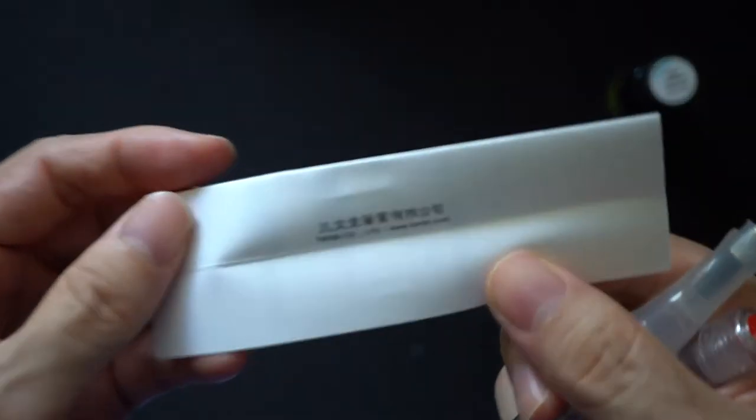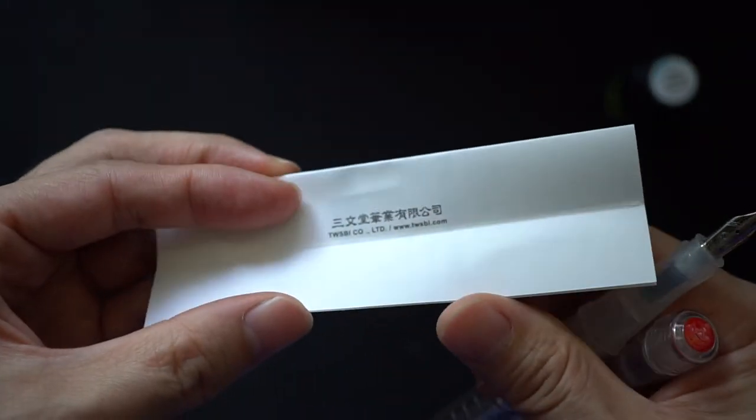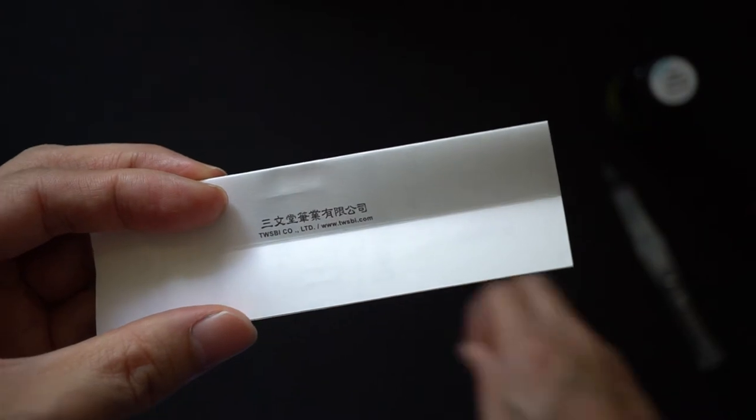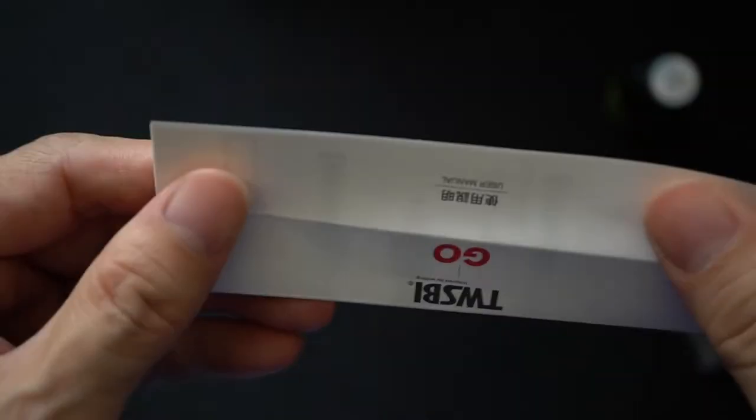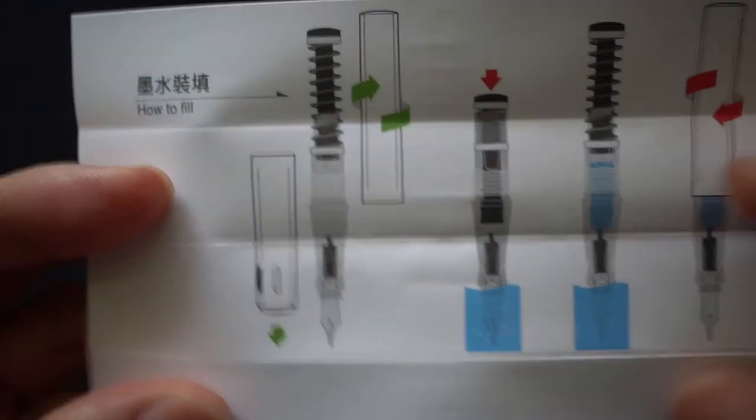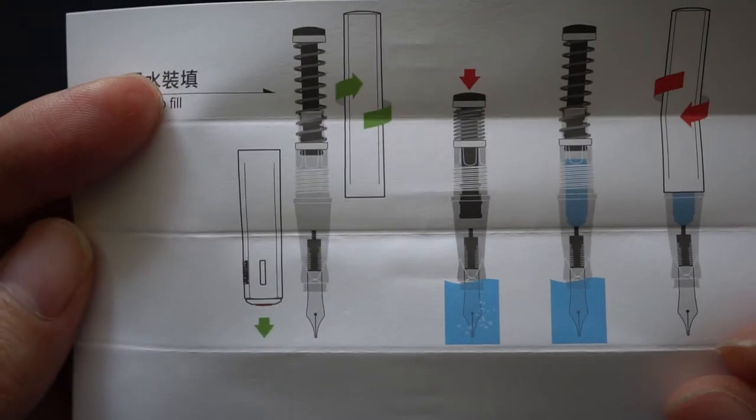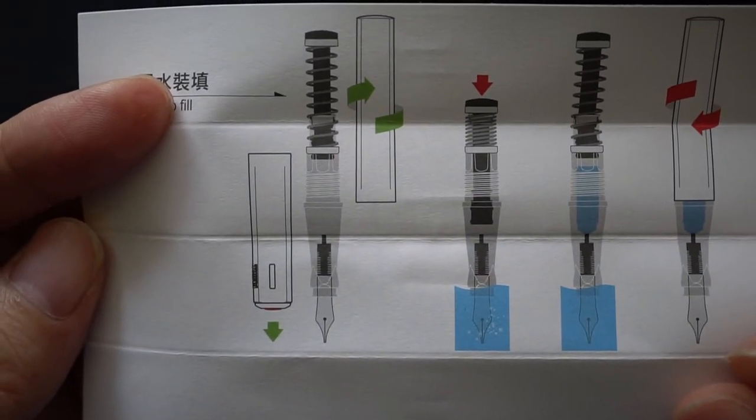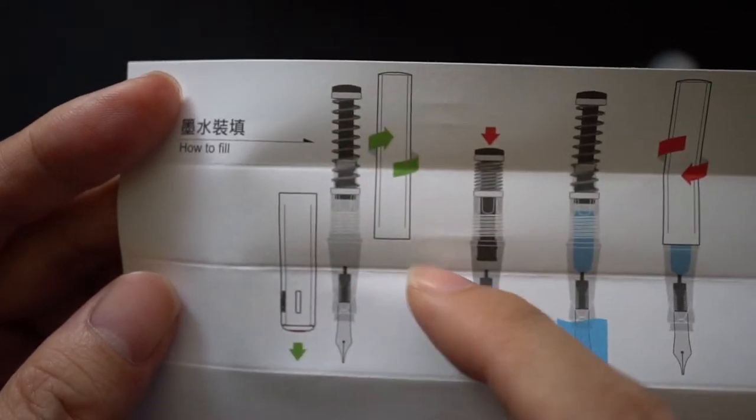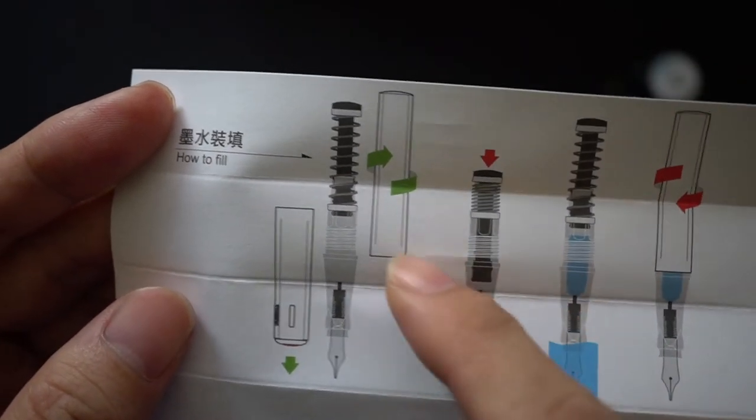Instruction-wise, which I always like about Twisbee, they always give instructions for the pens they sell as a nice touch. It's just telling you how to fill the pen. Essentially, how it works is you take off the back part of the pen, which is probably called the barrel.